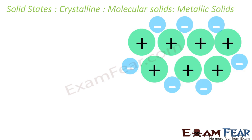Next are the metallic solids — pretty interesting. Metals are nothing but an ordered collection of positive metallic ions surrounded by a free sea of electrons. The blue dots you see in the diagram are the free electrons moving throughout the structure.